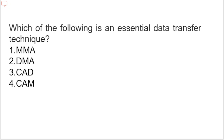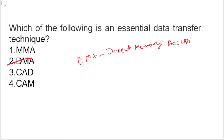Which of the following is an essential data transfer technique? Options are: MMA, DMA, CAD, or CAM. The correct option is DMA. DMA stands for direct memory access. It is a data transfer scheme where data is directly transferred from an I/O device to RAM or from RAM to an I/O device.